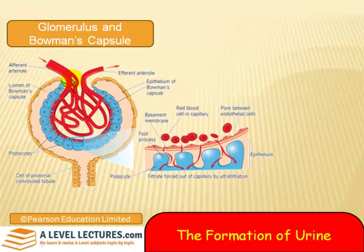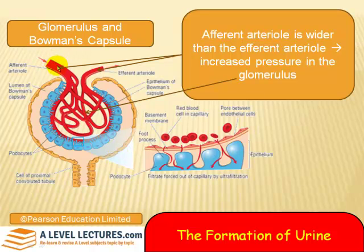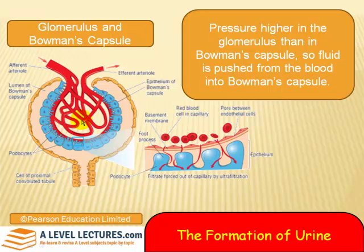Now here's Bowman's capsule and the glomerulus in structure. We're looking at a magnified view of the membrane at this area. Look at the diameter: the afferent arteriole is very wide compared to the efferent side, which builds up pressure — imagine people rushing down a corridor that gets narrower. This gives increased pressure in the glomerulus, which is higher than in Bowman's capsule, so fluid is pushed from the glomerulus into Bowman's capsule.